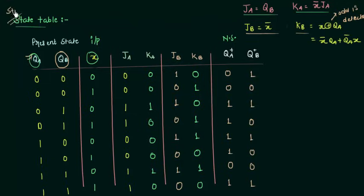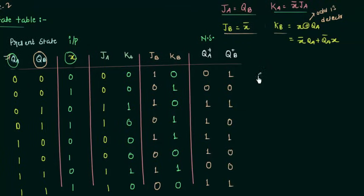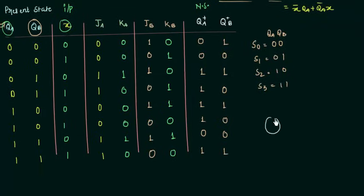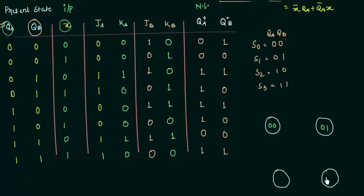The final step is to make the state diagram using this state table. As there are two flip-flops, there are four possible states: S0 which is 00 (QA QB), S1 is 01, S2 is 10, and S3 is 11. I will make these four states and use the state table to see the transitions.